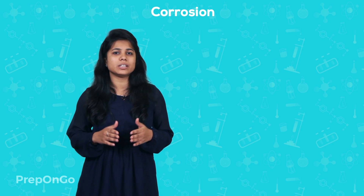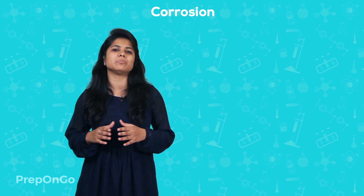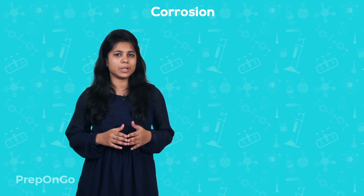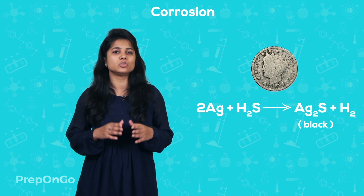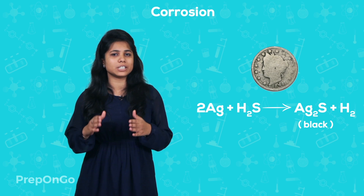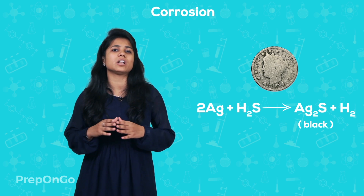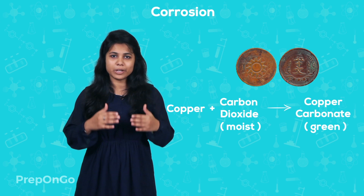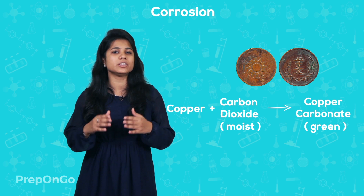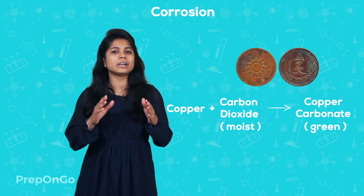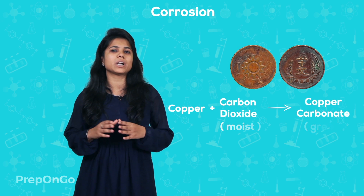It is not necessary that every metal reacts with the same element present in the air to form the same compound. For example, when we talk of silver, it reacts with the sulphur present in the air to form a layer of silver sulphide. That is the reason why silver gets black after a long time. Similarly, copper reacts with moist carbon dioxide present in the air to form a green coating of copper carbonate.